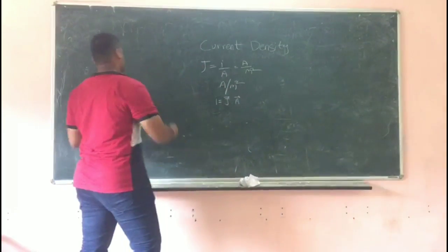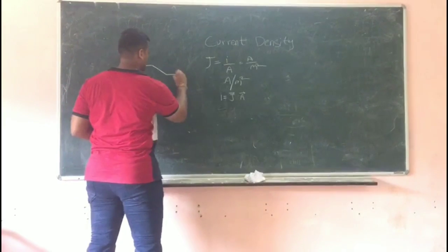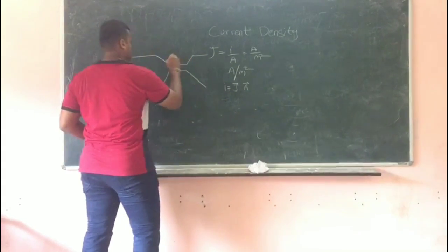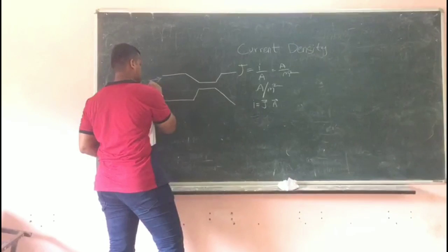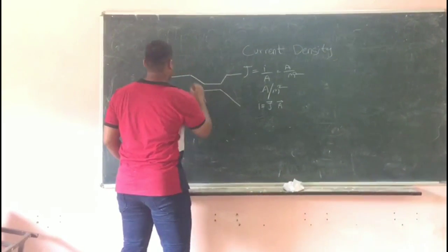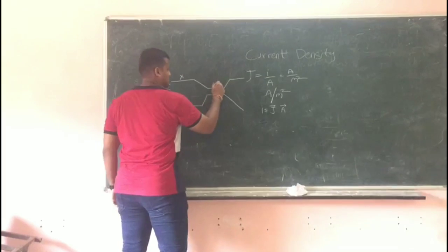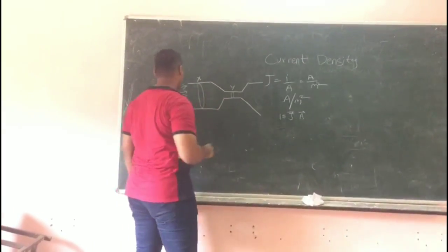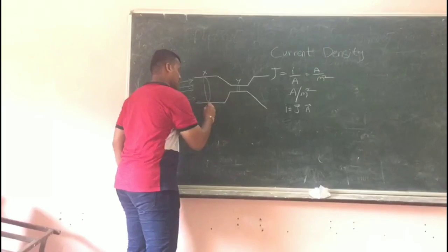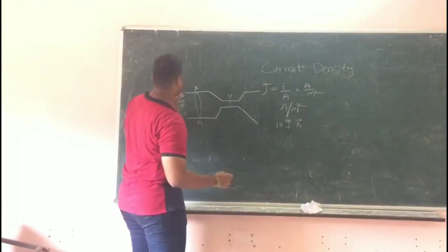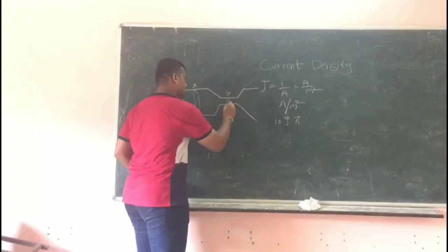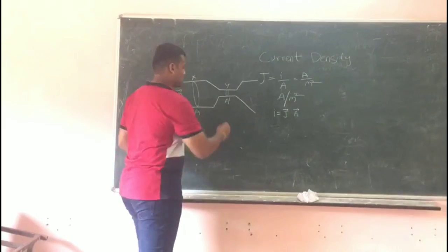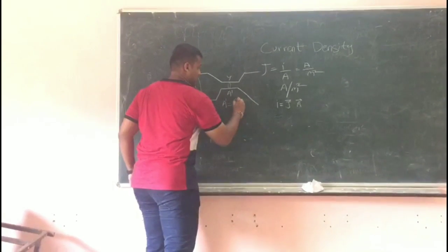For example, we can take the wire in vector form. So this is A and this will be written as 8x. As we know that 8x is always equal to 8x by 4x.